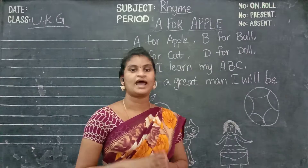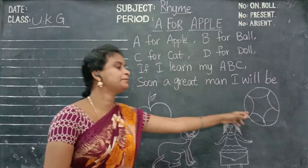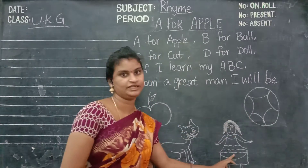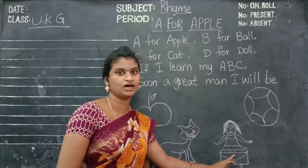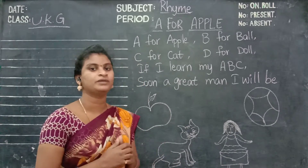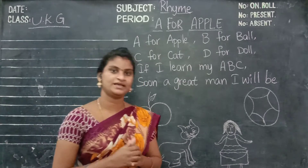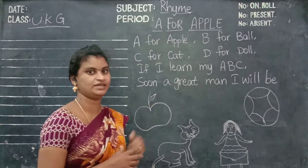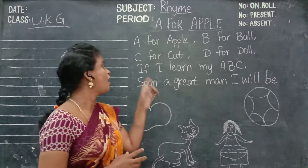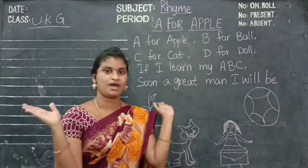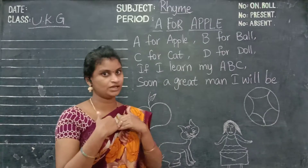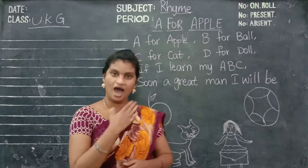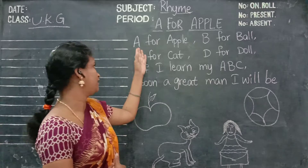A for apple, B for ball, C for cat, D for doll. If I learn my A, B, C, soon a great man I will be. Soon a great man I will be.